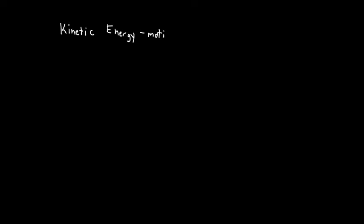To really understand work, we need to understand how it's related to energy. We'll start with the concept of kinetic energy. Kinetic energy has a very easy definition — it's energy in motion, energy related to actually moving. Any object that's in motion has some kinetic energy, and we define it as K equals one-half times the object's mass times its velocity squared.